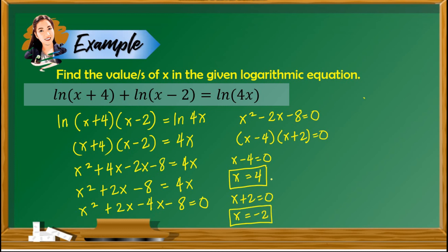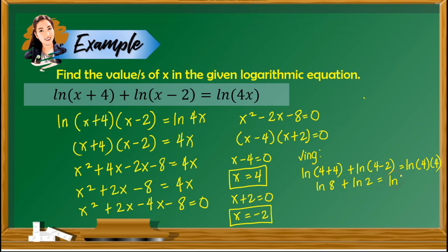Let us now do the checking. For positive 4: ln of 4 plus 4 plus ln of 4 minus 2 equals ln of 4 times 4, giving ln of 8 plus ln of 2 equals ln of 16. This simplifies to ln of 16 equals ln of 16, so x equals 4 is a real solution. For negative 2: by observation, inputting negative 2 on the right side gives 4 times negative 2 equals negative 8, and we don't take the ln of a negative number. Therefore, the only solution is x equals 4.